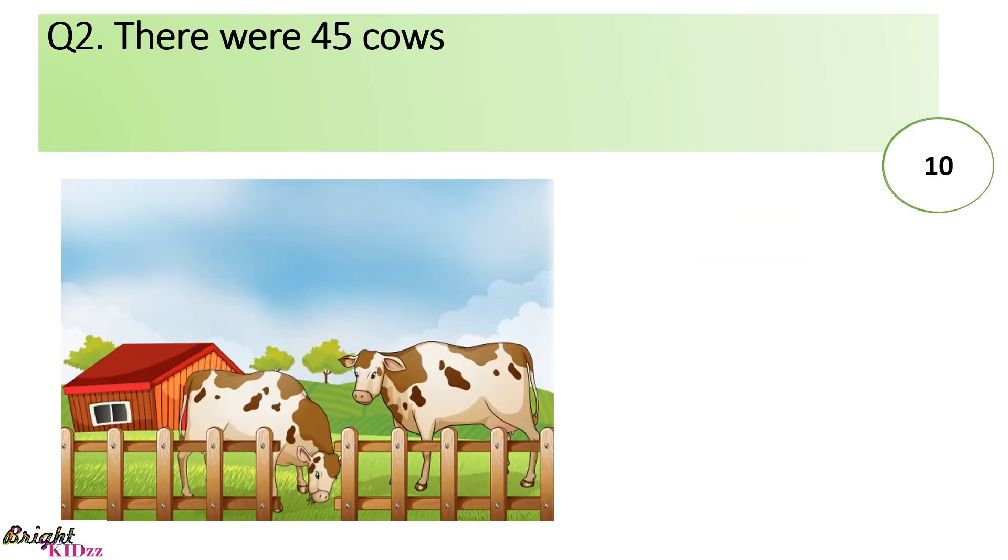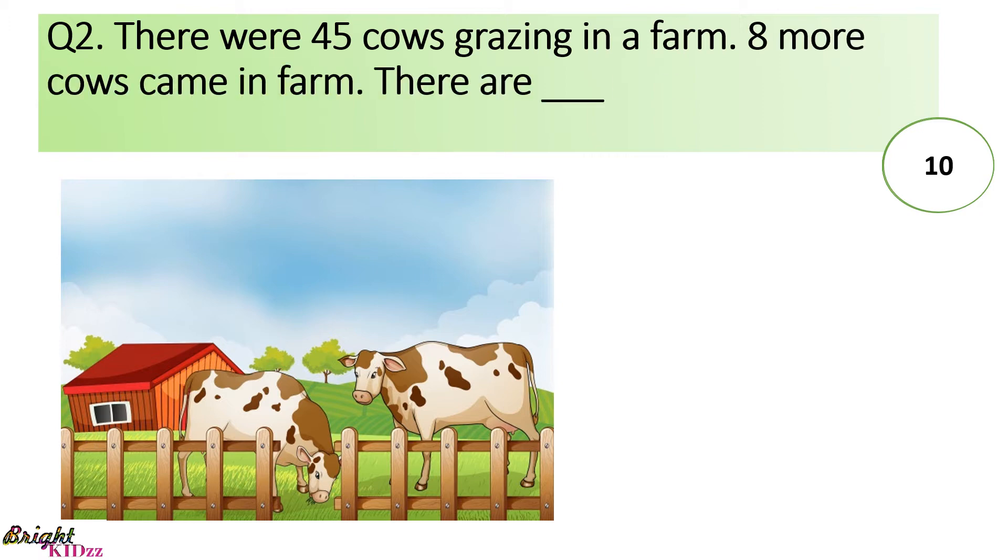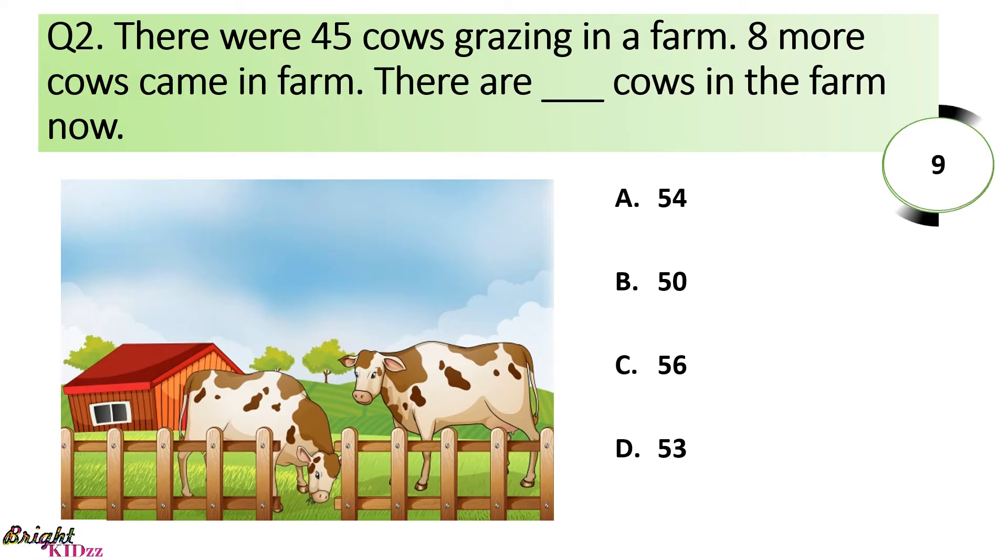There were 45 cows grazing in a farm. 8 more cows came in the farm. There are dash cows in the farm now. 45 plus 8 is equal to 53.